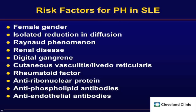Briefly on lupus: about 1% to 4% of lupus patients are at risk for developing PAH. Typically they are female, with isolated reduction in diffusion capacity and Raynaud phenomenon — sometimes reading the literature they appear to be a scleroderma-spectrum disease. They often have renal disease, digital gangrene, cutaneous vasculitis, or livedo reticularis, and multiple antibodies suggesting immune tolerance breakdown — positive rheumatoid factors, anti-ribonucleoprotein, antiphospholipid antibodies, and anti-endothelial antibodies.